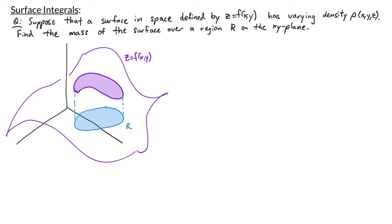If the surface has constant density, then to find the mass all we have to do is take the density times the surface area. Since the density varies depending on the point, to find the mass of this portion of the surface we have to add up the density at every single point on the surface. When we add up a function over points on the surface, that's a surface integral.